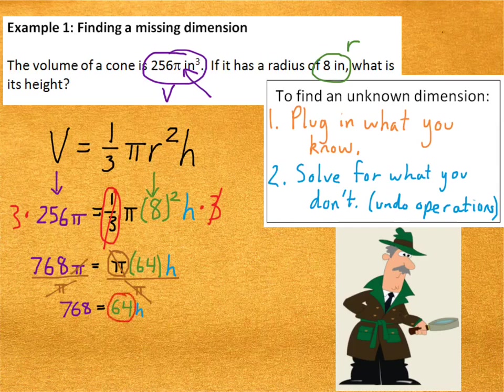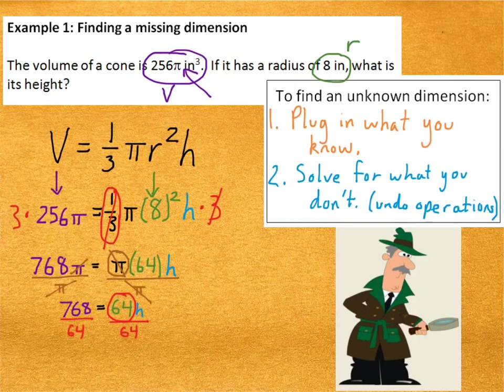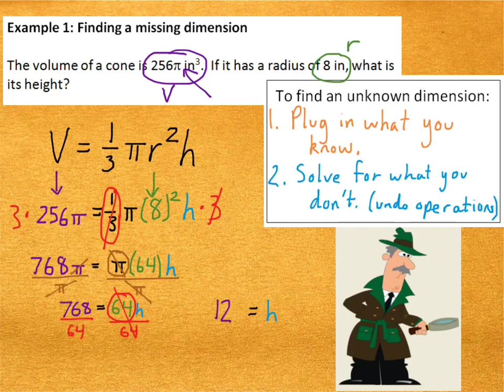Okay. The last thing we need to remove is the 64. Since it's 64 times h, the opposite of multiplication is division. So, again, I'll be dividing both sides. So, we'll divide both sides by 64. 64's will cancel. And that will give me h = 12. Ah! And don't forget your units. That would be 12 inches. Alright. So, we found the height. Woohoo!